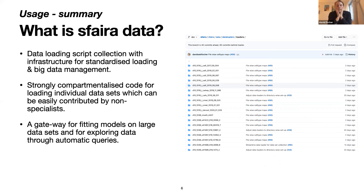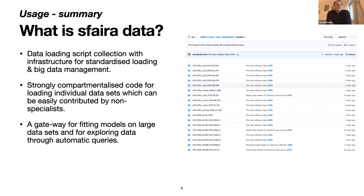Today we'll focus on Sphira data — the data zoo or data repository, as we sometimes call it. First of all, it's a collection of loading scripts which allow you to load data in a standardized fashion, and also to scale this across different scenarios and many data sets. On the right, I pasted a screenshot of our GitHub. You see a lot of folders here with names essentially derived from DOIs. These folders contain Python scripts, and these scripts are the data loaders that we will be talking about now. This script collection is standardized in the sense that scripts are ordered by DOIs, and we have a ton of specific constraints on these scripts which make them easier to share and write.